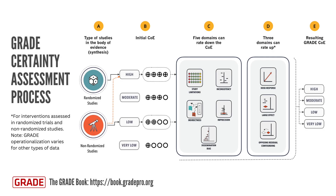Let's recap what we've reviewed so far. In the GRADE approach, randomized trials start as high-certainty evidence, while non-randomized studies generally start as low-certainty evidence. Then five domains are assessed sequentially: study limitations, inconsistency, indirectness, imprecision, and dissemination bias.